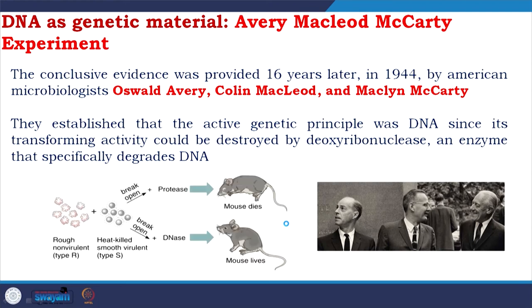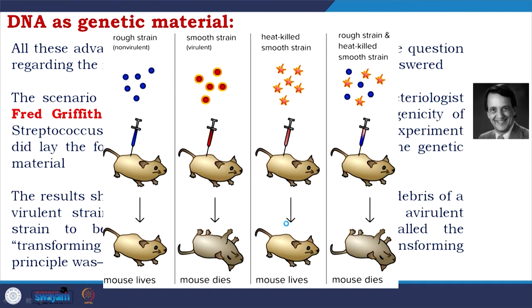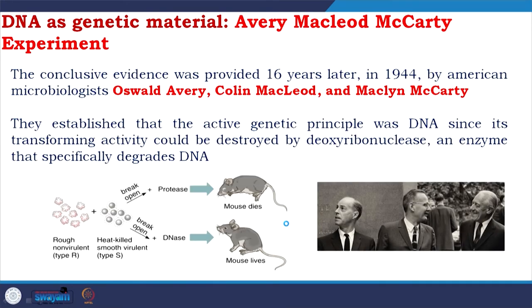In their experiment, they combined rough non-virulent and heat-killed smooth virulent strains as in Griffith's earlier experiment. They added protease to one combination and DNase to another. When they added protease, the mouse died — meaning they could not eliminate the killing power of the mixture. Whereas when they added DNase, the mouse survived — meaning DNase made the factor involved in killing ineffective, which confirmed that the factor is DNA and not protein.